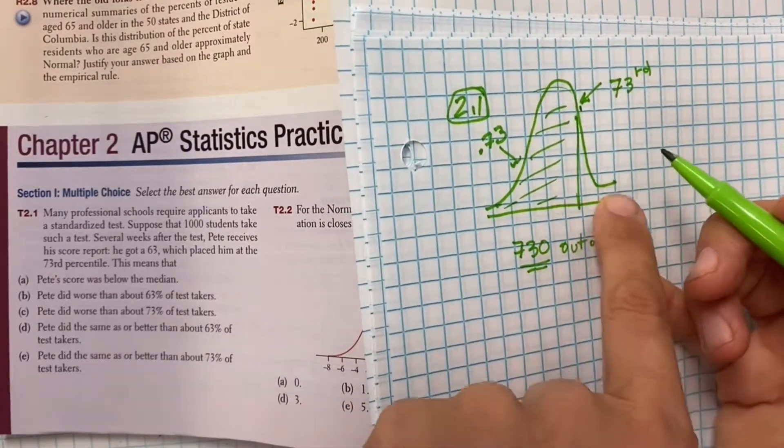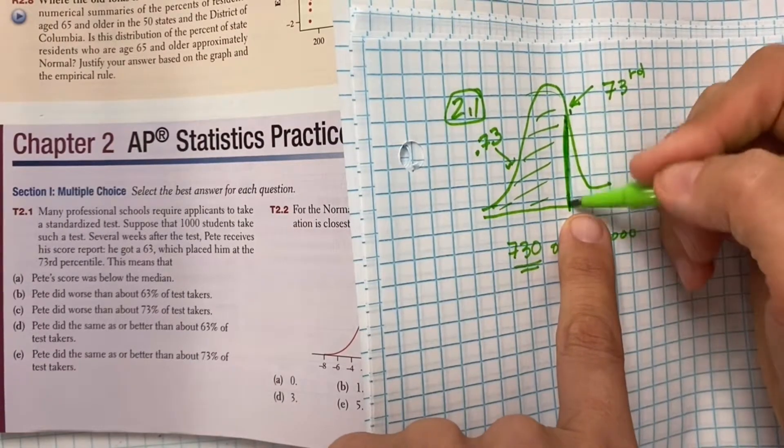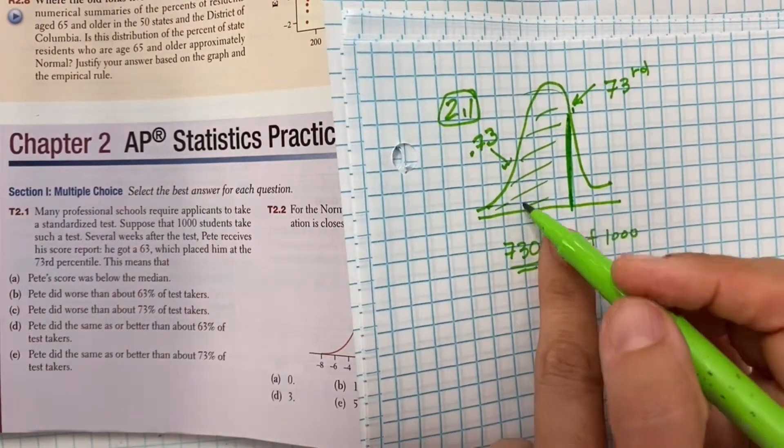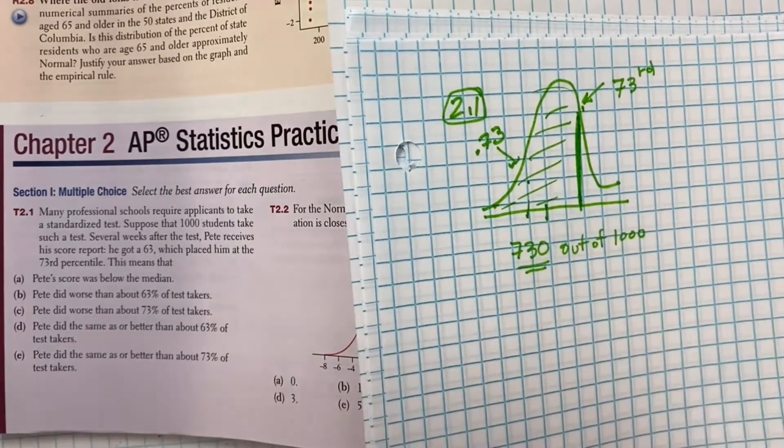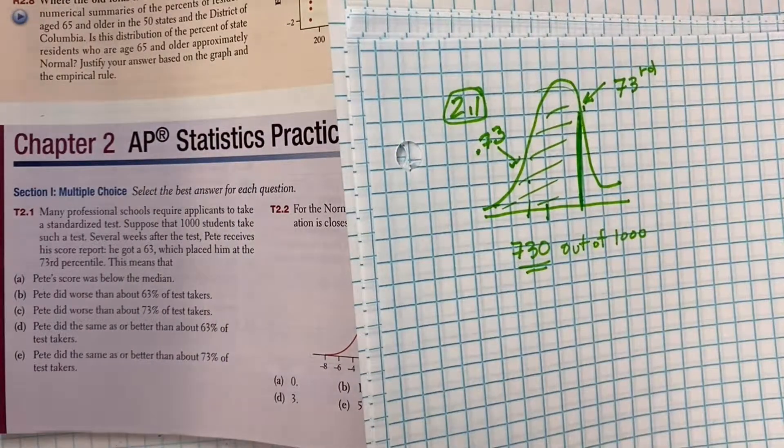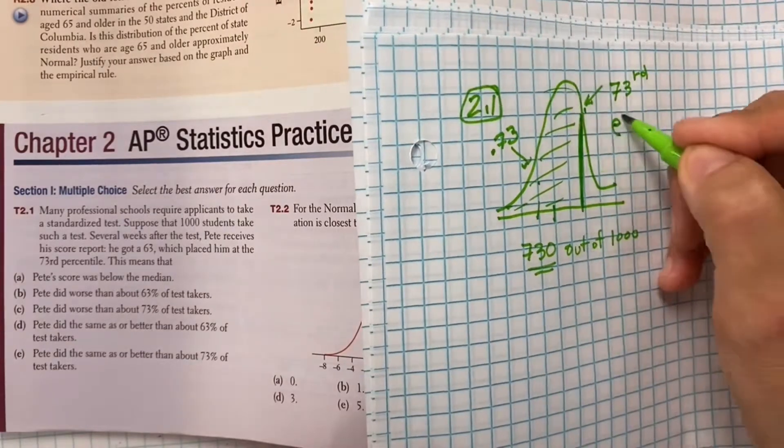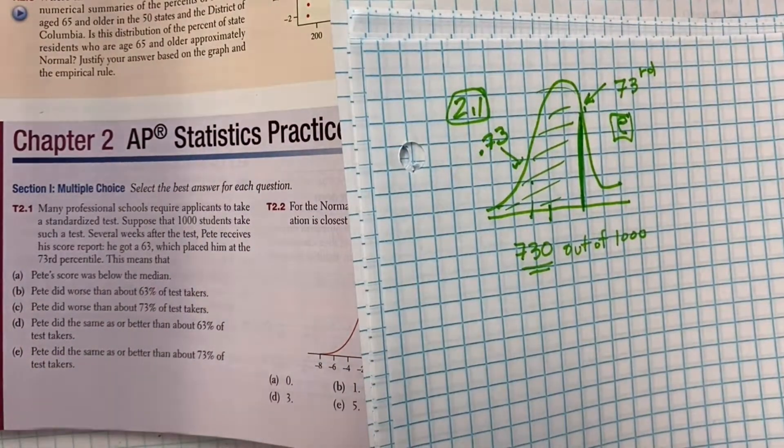There was 1,000 people. So he did, or excuse me, at or below. He did at or below 730 people. He was at or below 730 people out of the 1,000 people. So a couple ways they could ask it, but essentially, Pete did the same or better than about 73% of test takers, and that's what the picture shows. These are the people that did better than him. The answer is B.